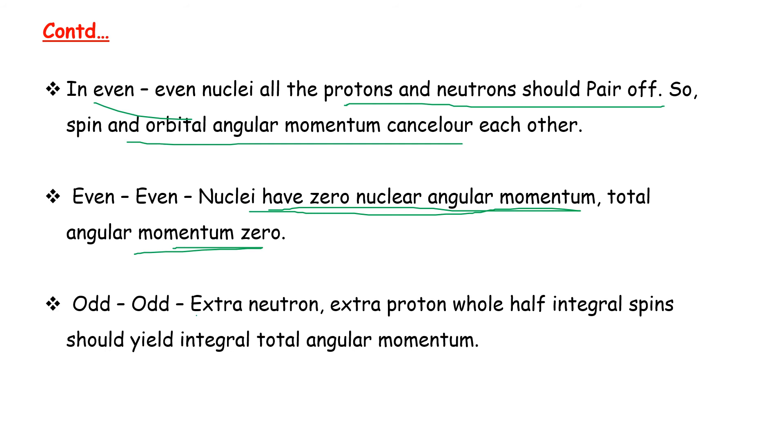For odd-odd nuclei with an extra neutron or extra proton, half-integral spins should yield integral total angular momentum. This follows the Pauli Exclusion Principle.